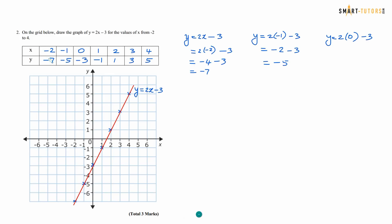Question number 2: on the grid below, draw the graph of y = 2x minus 3 for values of x from minus 2 to 4. You need to prepare a table with x values: minus 2, minus 1, 0, 1, 2, 3, 4. This is a calculator paper, so substitute and use the calculator. The y values are minus 7, minus 5, minus 3, minus 1, 1, 3, 5. Plot the points — for example, (minus 2, minus 7), (minus 1, minus 5) — and draw the graph. That's easy, three marks again.